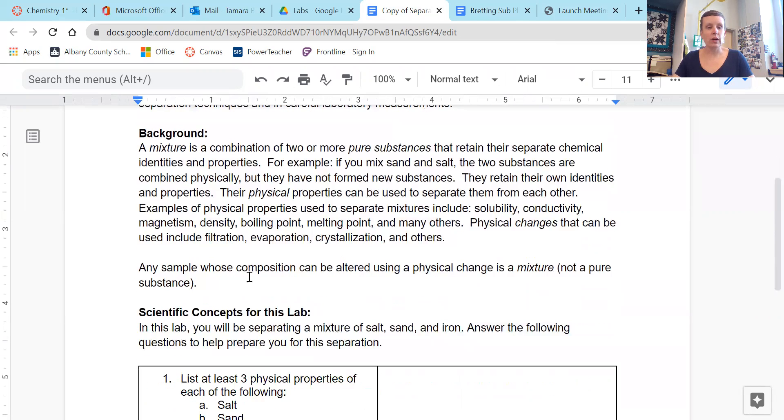Background. We've talked about this already, but a mixture is a combination of two or more pure substances that retain their separate chemical identities and properties. For example, if you mix sand and salt, the two substances are combined physically, but they have not formed new substances. They retain their own identities and properties.